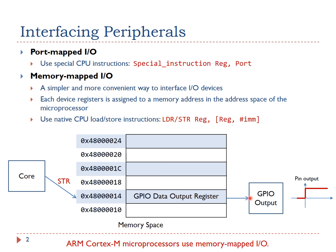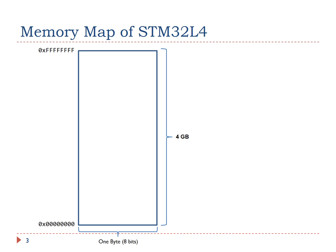ARM Cortex-M microprocessors use Memory Mapped I/O. The memory address of ARM Cortex-M has a total of 32 bits, supporting 4 GB of memory space. The memory space is divided into 6 different predefined regions, and each region is given a recommended usage.